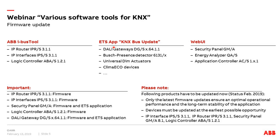There are at the moment three different solutions. One is updating via the ABB iBAS tool — covering the IP router, IP interface, and the logic controller. Then we have the ETS app called KNX bus update, which now supports more components: the DALI gateway, bus presence detector, motion detector, the new universal dim actuator, LED dim actuator, many climate echo devices, and more in future. Additionally, some components with a web user interface — the security panel, energy analyzer, and application controller in the climate echo range — use the web UI for firmware updates.